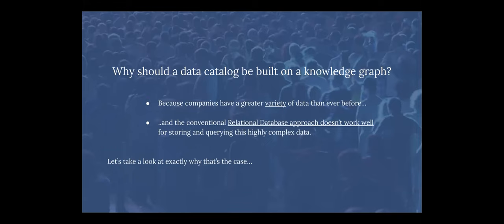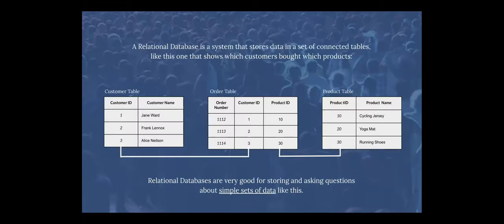The point is that when we're building a catalog, we really have to be able to account for the wide variety of data that companies have now. Relational databases don't work well for wide varieties of data — they work great for large volumes, but not so much for varieties. If you think about a relational database, it stores things in tables. We can have a customer table and product table, and putting a product with a customer creates an order. If you have a relatively limited schema, relational databases are great for that.